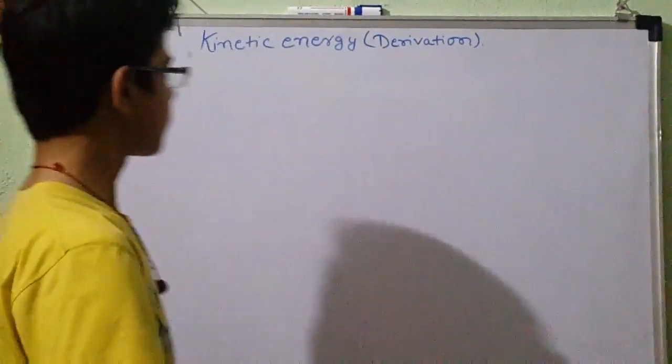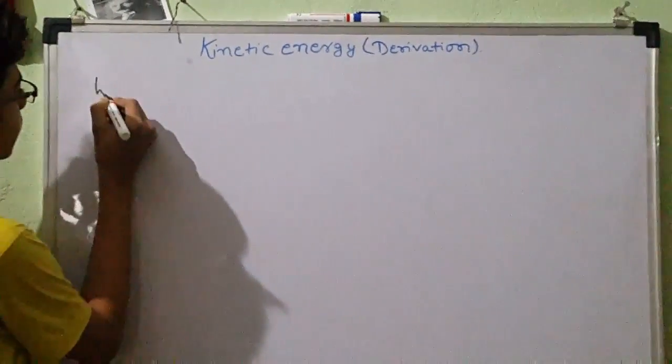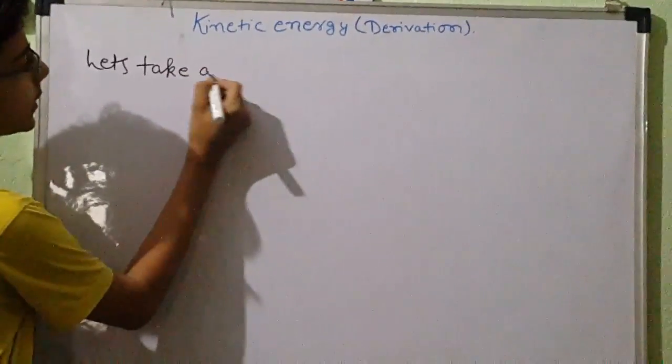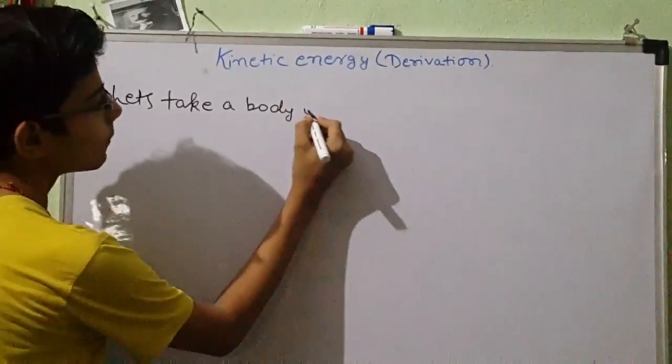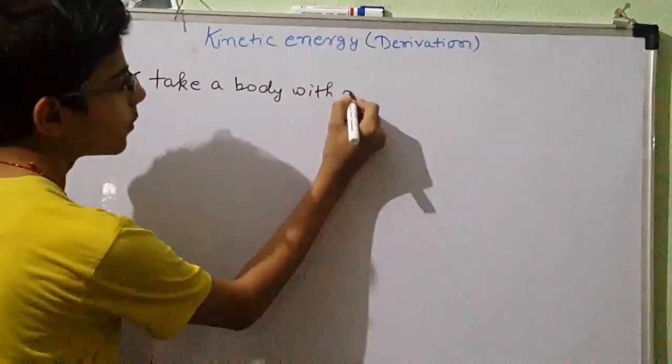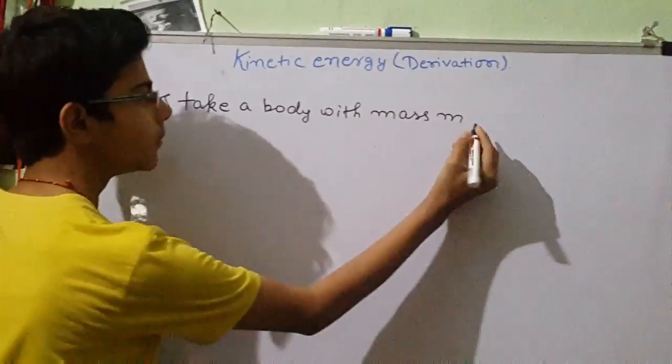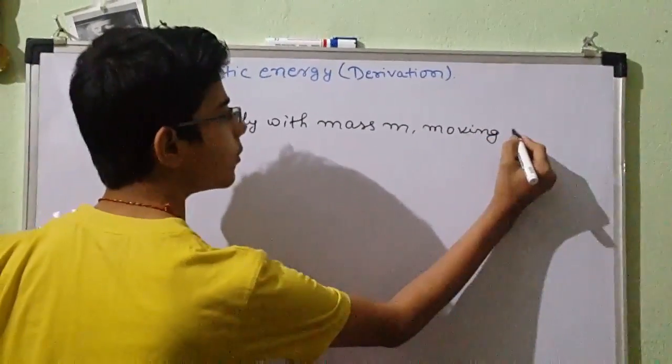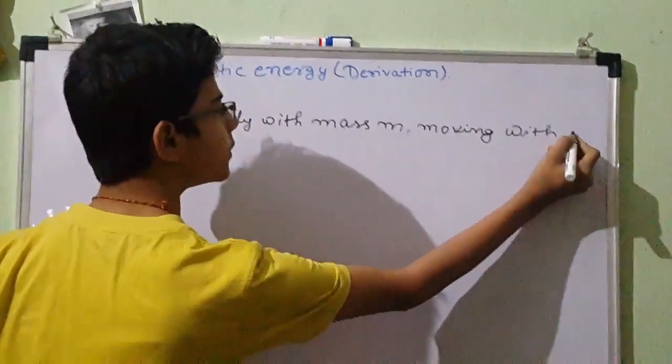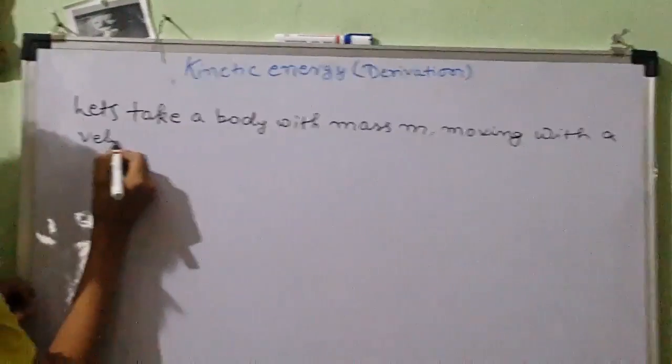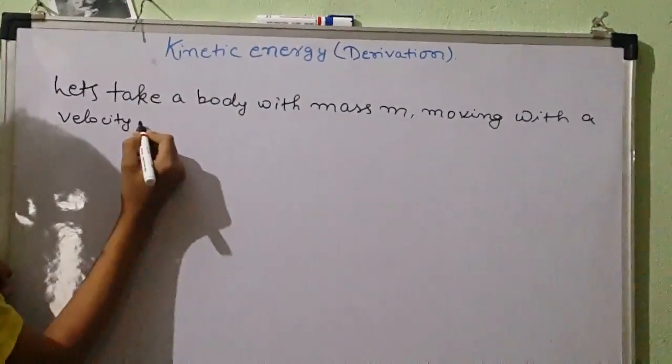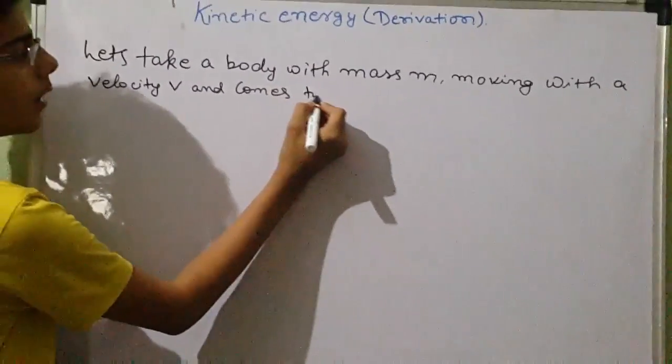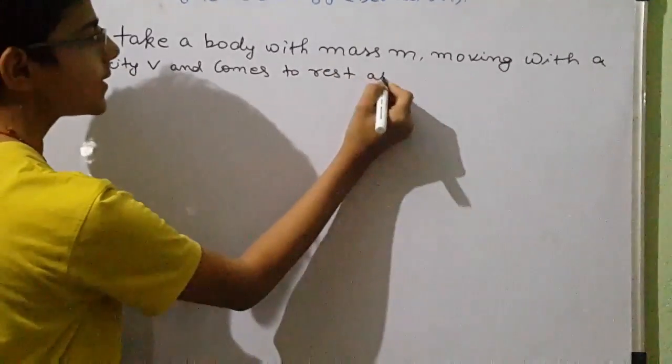So let's see this derivation. Let's take a body with mass m, moving with a velocity v, and comes to rest at a distance of s.